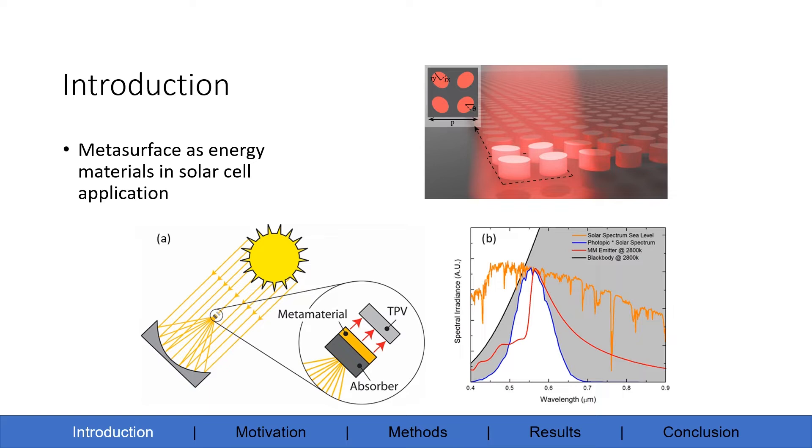First of all, I'd like to introduce the concept of metasurface. Metasurface, as shown in the figure here, is an artificial material that has exotic control of electromagnetic properties S from its geometry G, and metasurfaces as energy materials can be typically applied in solar cell applications.